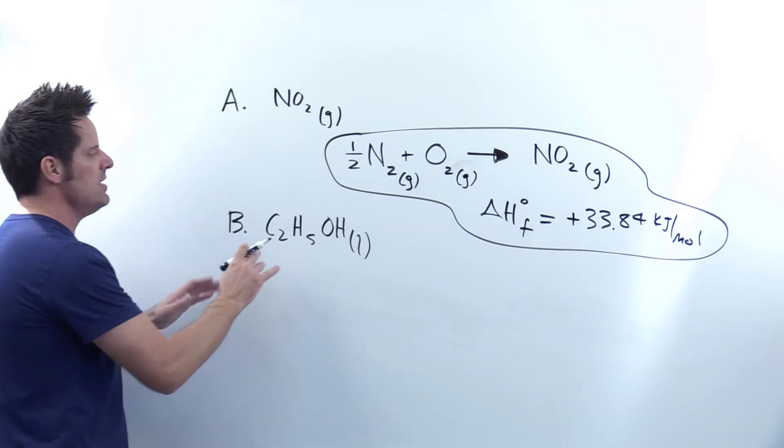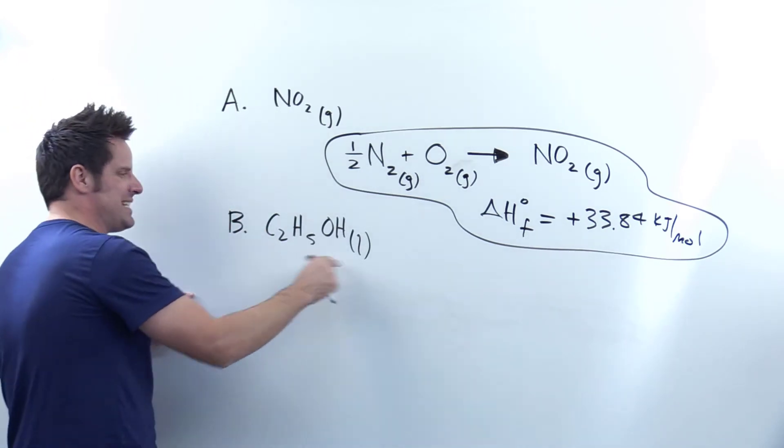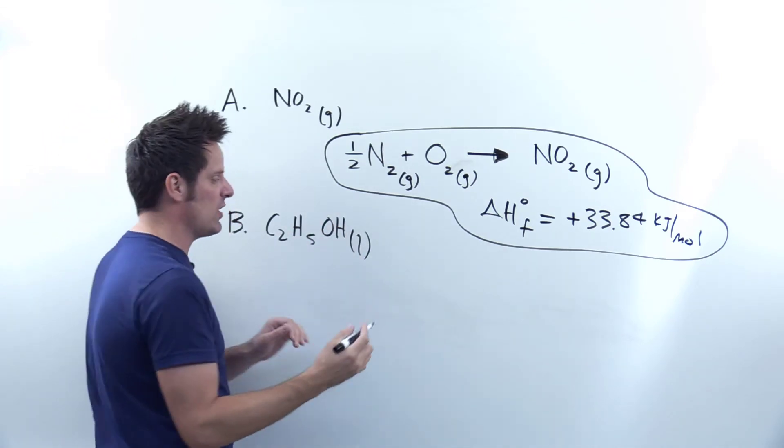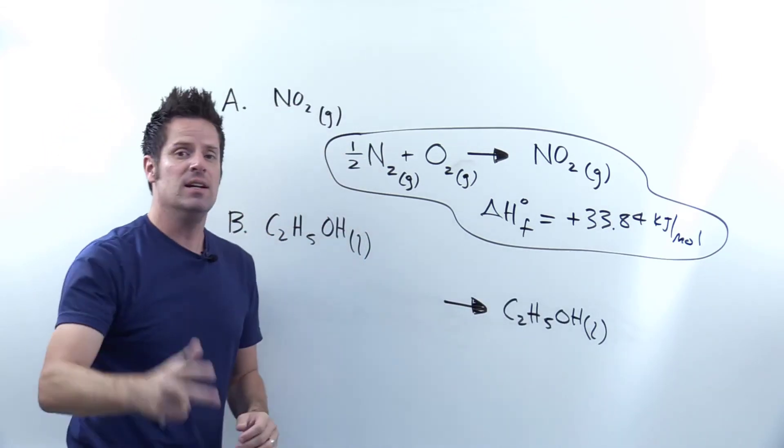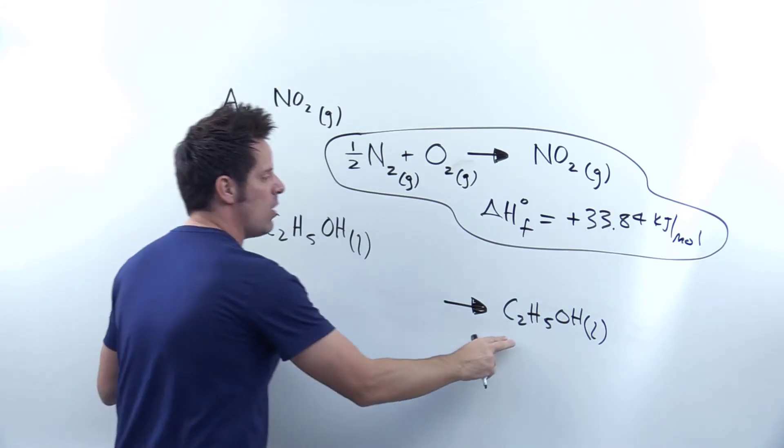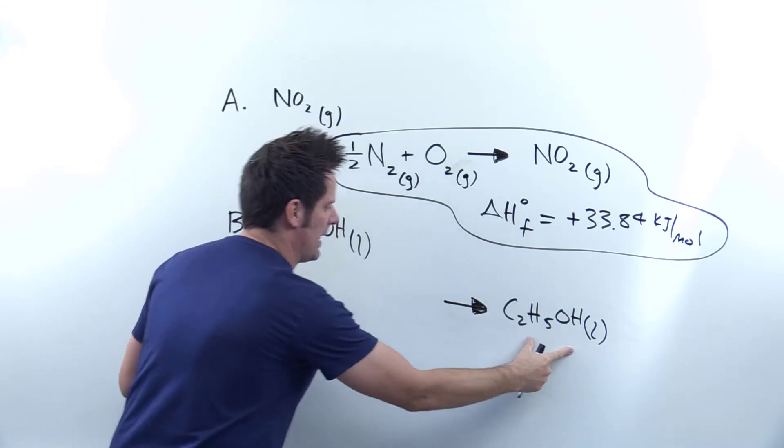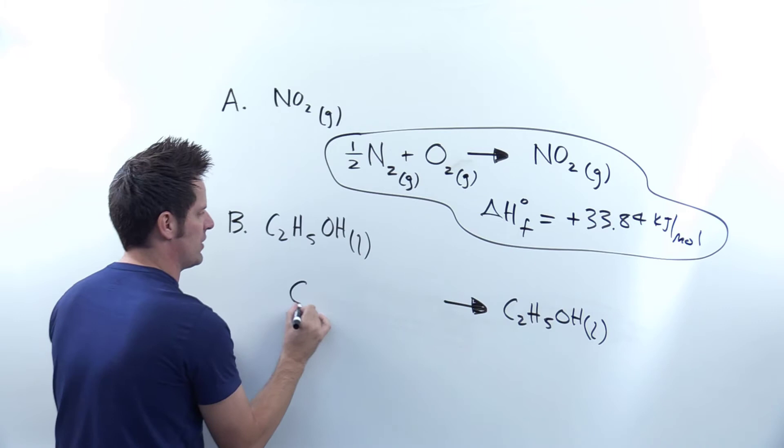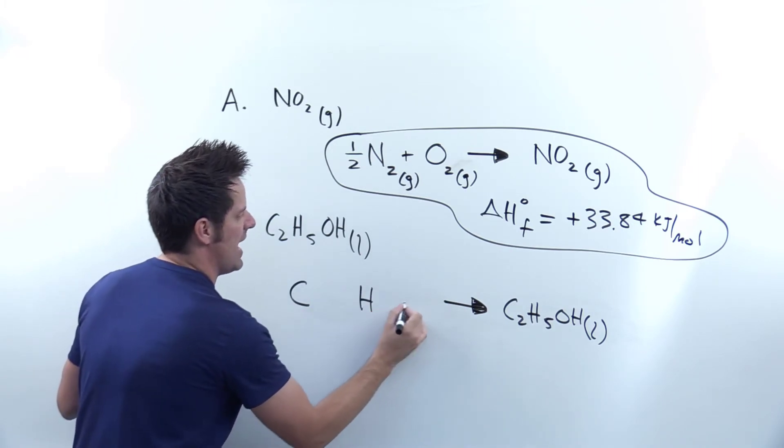Now we'll do the same thing for part B, starting with step one. Step one is we take this substance and write it on the right side of our yield sign, being sure to write down the correct physical state, solid, liquid, or gas. Now we take each element that's found in this formula and write it on the left side of the equation. So I have carbon, I have hydrogen, and I have oxygen.